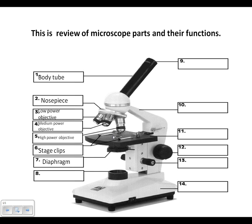If there's too much light shining through, you can adjust your diaphragm and you won't have as much light. Or you can do the exact opposite — if there is not enough light, you can adjust your diaphragm so that more light shines through. The light comes through the lamp, which is your light source.